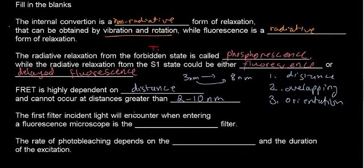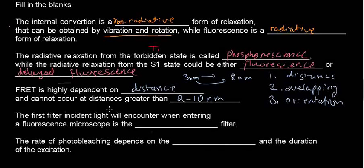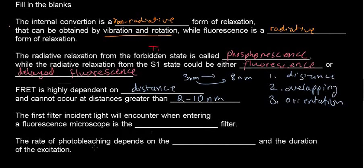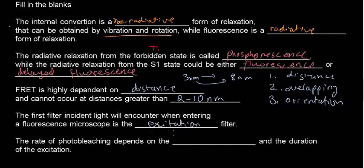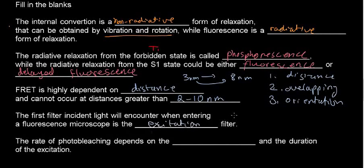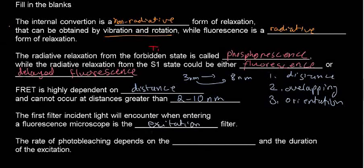The first filter incident light will encounter when entering a fluorescence microscope is the blank filter. When you think about it: the first thing needed to excite a fluorophore is to match the light to the molecule's absorption or excitation spectrum. So this would be the excitation filter. Note: writing 'absorption filter' would be incorrect, even though the concept is similar.